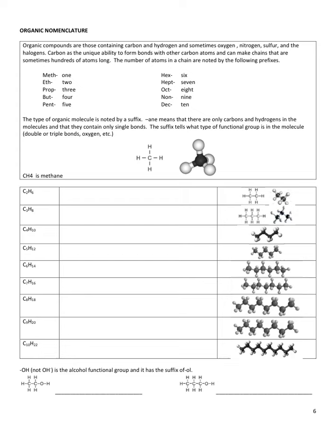Carbon is very unique in that it has the ability to catenate, which means it can make multiple bonds to other atoms of itself. So it can make long chains or even rings or cyclical compounds. Sometimes those chains can be hundreds of atoms long, molecules such as polymers.